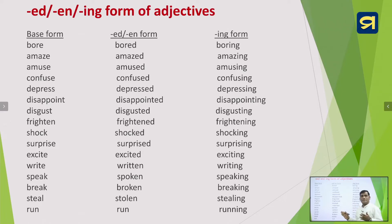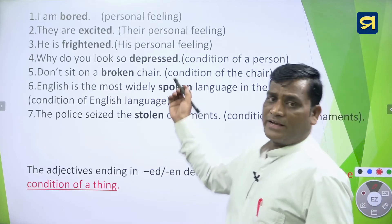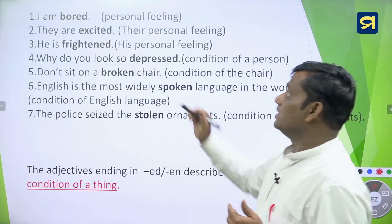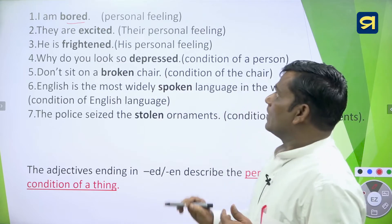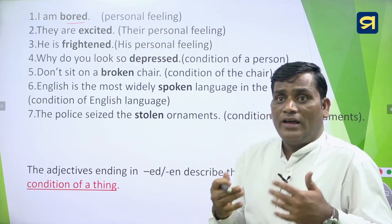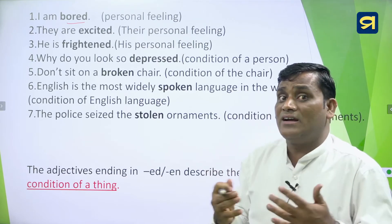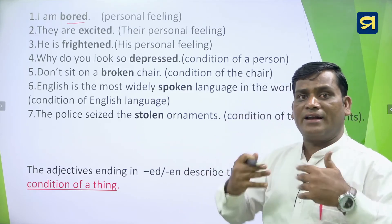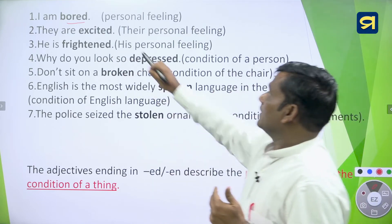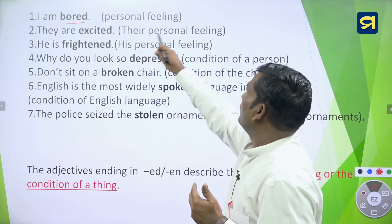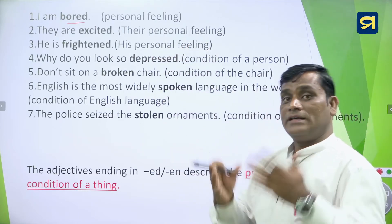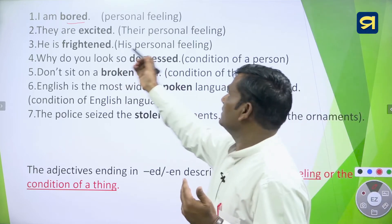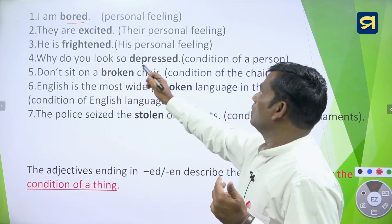Now we will use these in sentences. 'I am bored' — the ED form of boring expresses a personal feeling. It expresses the feeling of a person which cannot be seen; it is inherent or hidden. 'They are excited' — excited tells about the feelings of the people; it is also hidden and cannot be seen. 'He is frightened' — also a personal feeling. 'Why do you look so depressed?' — the ED form of adjective tells the condition of a person.